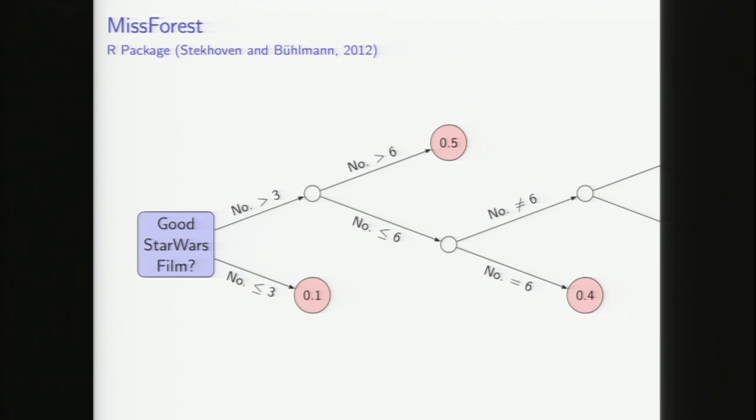So how do we use random forests for imputation? We do something called regression imputation — though it could also be classification. For every missing value in your dataset, you train an ensemble of decision trees to predict that missing value given the observed values. It's nothing too complicated. MissForest is pretty state of the art, but it's not super good for dealing with images or text and other unstructured data.